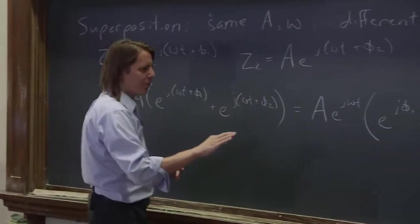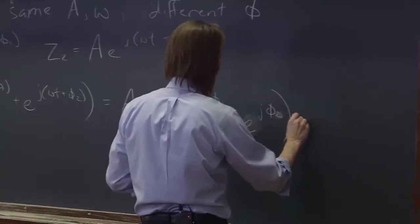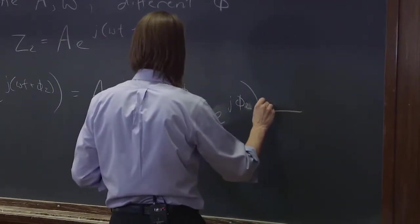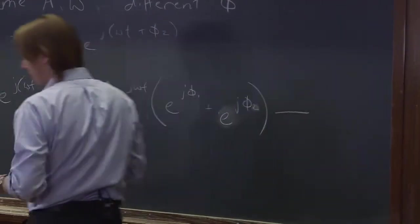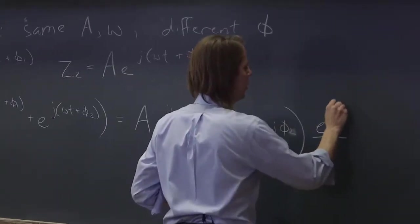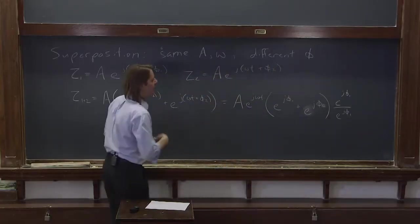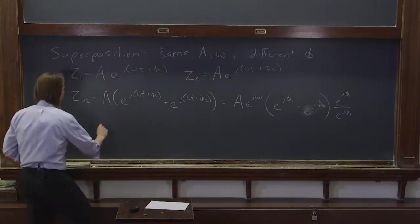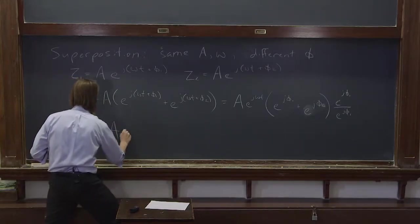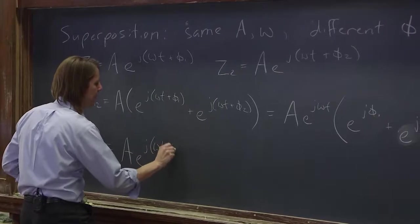So now, if you want to make it even more simple, if you want to simplify it a little bit, one thing you could do is you can multiply by e^(jφ1) over e^(jφ1). Basically, just multiply it by 1 as a way to factor out an e^(jφ1). So what you could get is that this thing is Ae^(jωt+φ1).